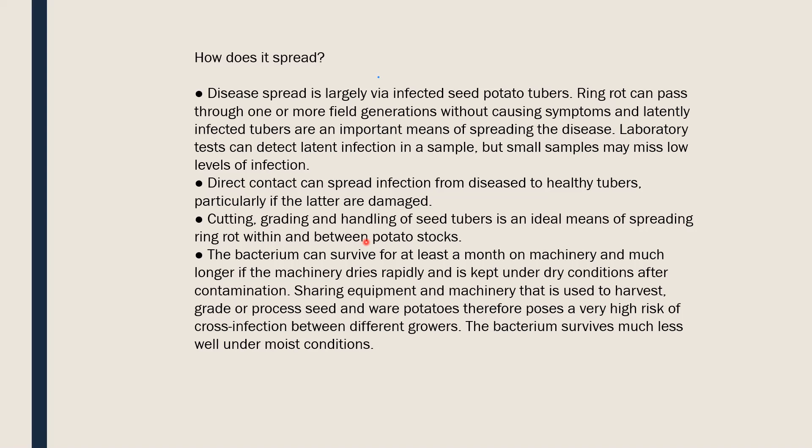Laboratories can detect latent infection in a sample, but small samples may have low levels of infection. Direct contact can spread infection from diseased to healthy tubers. If an infected tuber is oozing and comes into contact with a healthy tuber, and if there is any cut or epidermal cracking, the pathogen will enter the healthy tuber with great ease. Cutting, grading, and handling of tubers is an ideal means of spreading the disease within and between potato stocks.